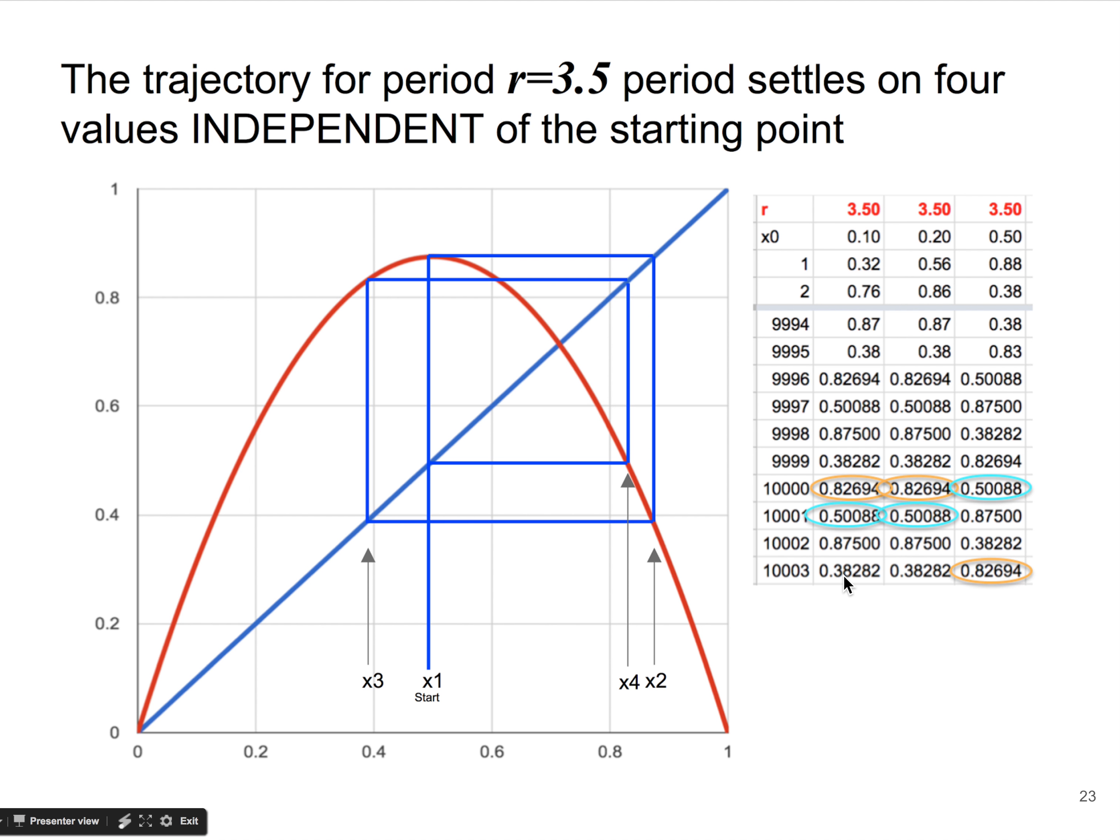If we started at 0.2, we get the same four values: 82, 50, 87, and 38. And notice these two are the same, these two are the same, and the same, and the same. But I've color-coded them because I want to illustrate that if you start at 0.5, you still get the same four values. There's 82, 0.5, 87, and 38, except they don't occur in the same order. Nonetheless, the system oscillates between four values in every experiment. It's just a matter of how you get there.